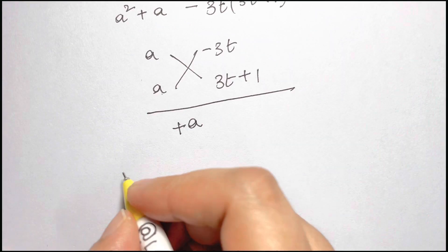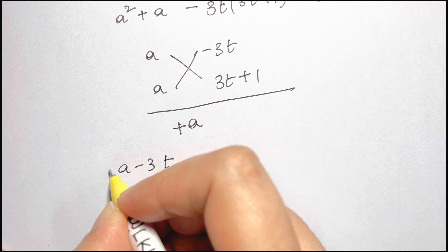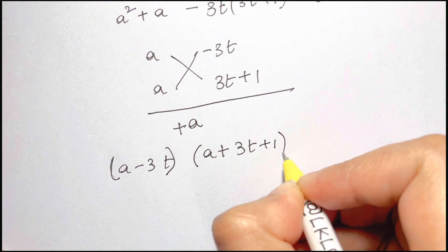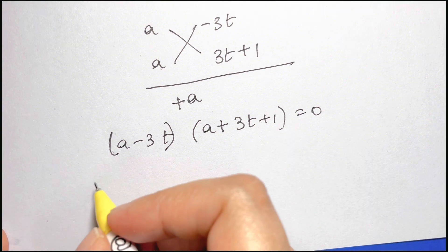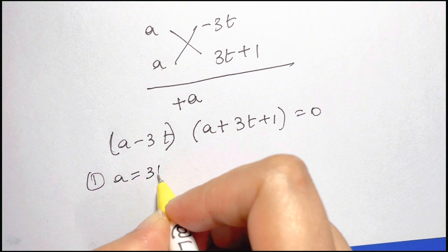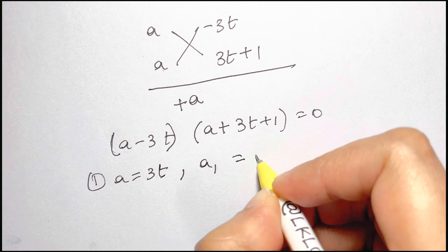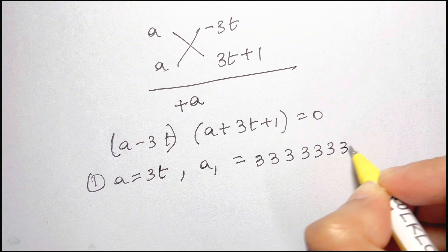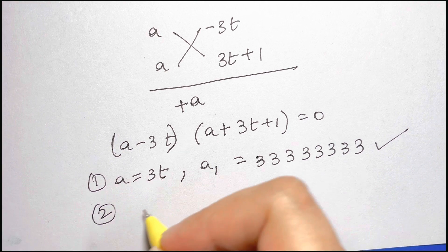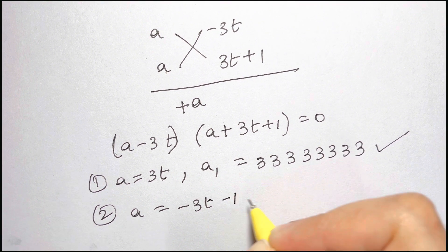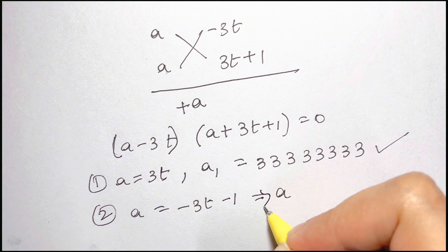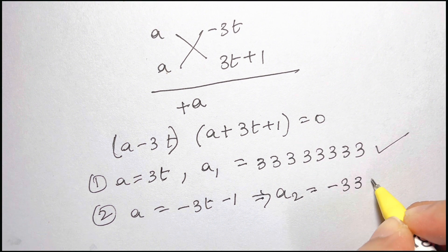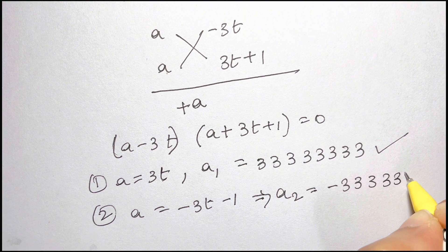So we have two factors: (a − 3t) and (a + 3t + 1) = 0. Now there are two cases. The first case: when a = 3t, the value of a will be 333333333. The second case: when a = −(3t + 1), which means a₂ = −333333334.